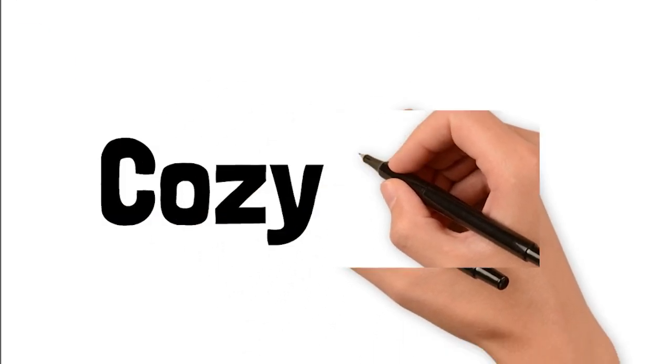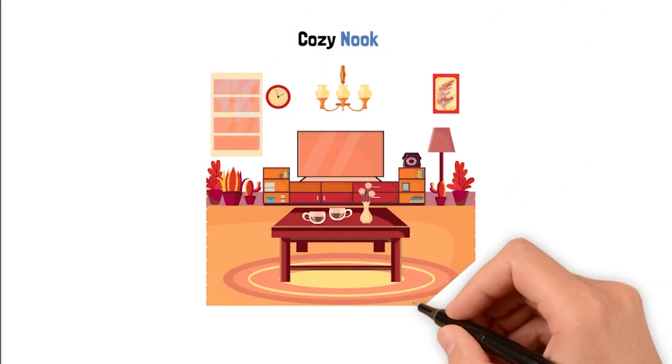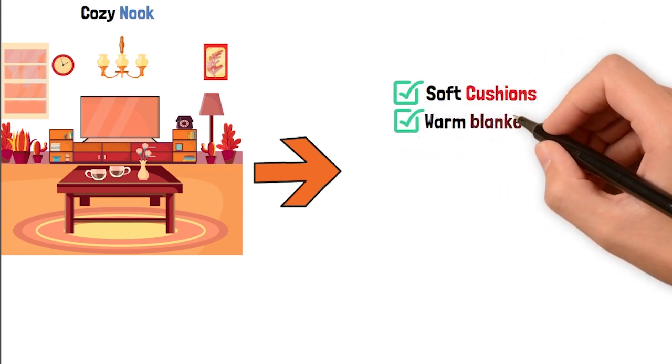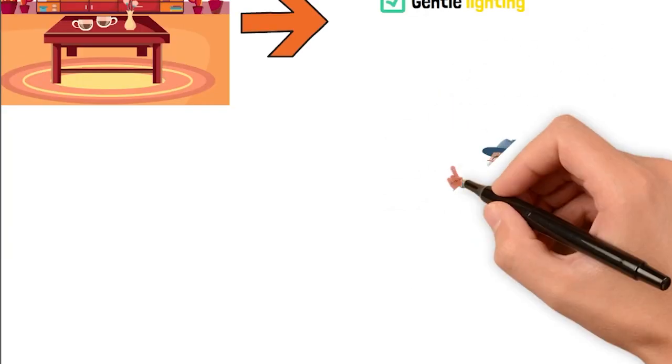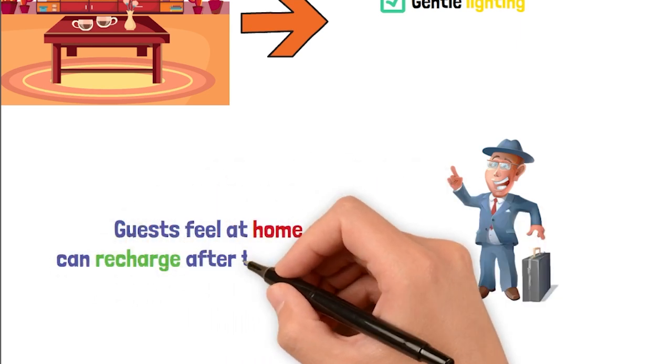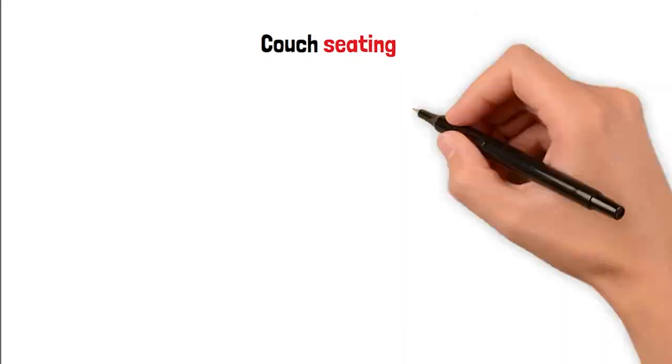The Cozy Nook is that warm inviting corner where guests can unwind with a good book or simply relax. Adding soft cushions, warm blankets and gentle lighting can create the perfect atmosphere. Think of it as a hideaway where guests feel at home and can recharge after their adventures. This is one of those underrated genius hacks that can totally transform your space.